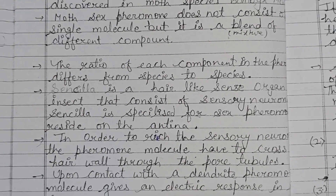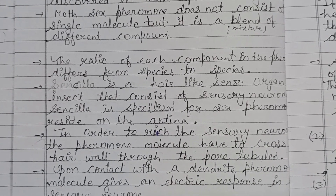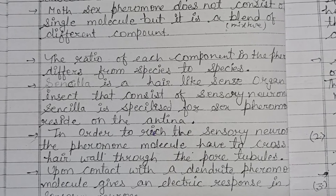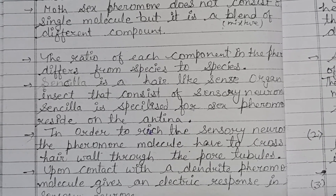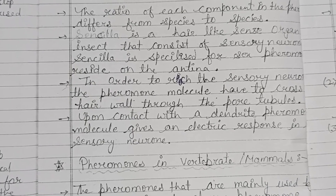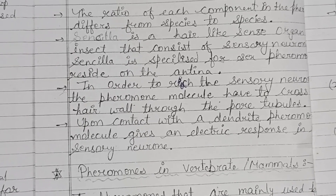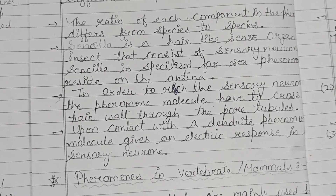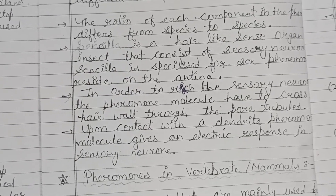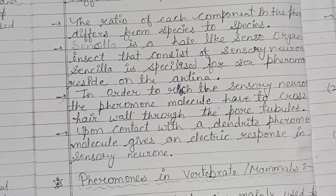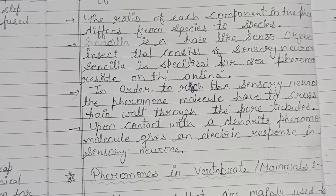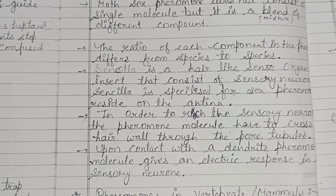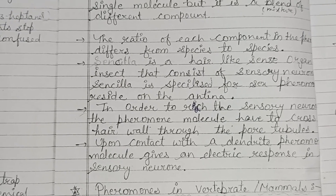Sensilla is a hair-like sense organ in insects consisting of sensory neurons, specialized for sex pheromones, and resides on the antenna. To reach the sensory neuron, the pheromone molecule must cross the hair wall through pore tubules, and upon contact with a dendrite, the pheromone molecule generates an electric response in the sensory neuron.